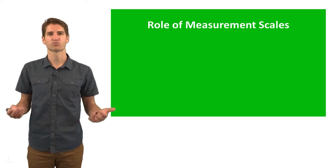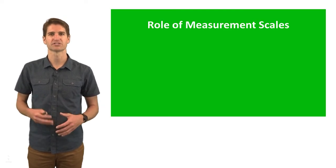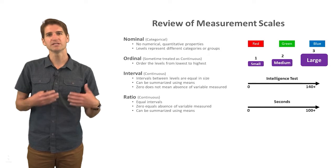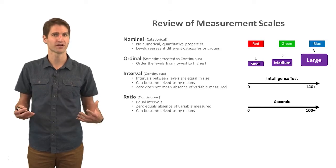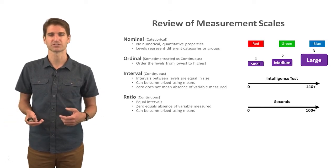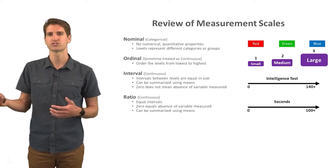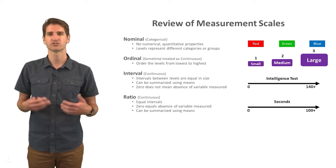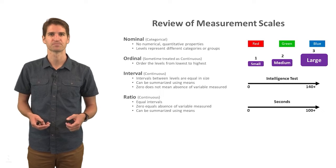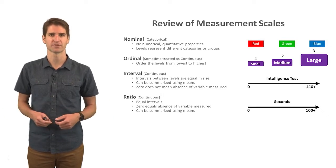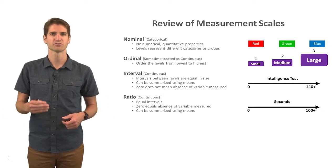So let's talk about the role of measurement scales in the context of descriptive statistics. We need to know what the measurement scale is for a variable before we actually run descriptive statistics, because the type of measurement scale will inform which type of descriptive statistic is most appropriate. To review, there are four different types of measurement scales: nominal, ordinal, interval, and ratio.